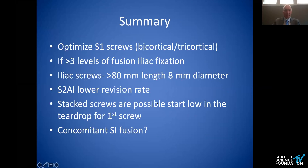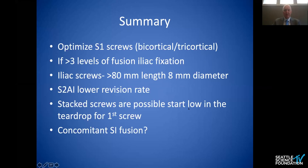In summary: optimize your S1 screws. If more than three levels of fusion are planned, probably perform iliac fixation — greater than 80 millimeters in length and eight millimeters in diameter is the target. S2AI seems to have a lower revision rate. Stacked screws are possible, and the role of concomitant SI fusion remains to be determined.